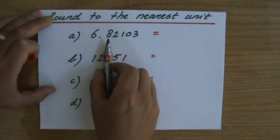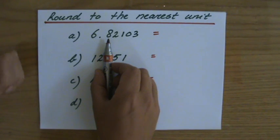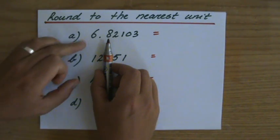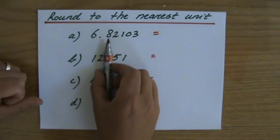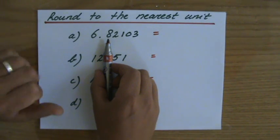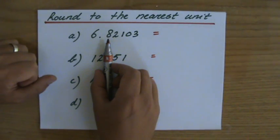If it's a five or higher, the six will go up to a seven. If it's lower than five, the six will remain a six. It doesn't go down to five.